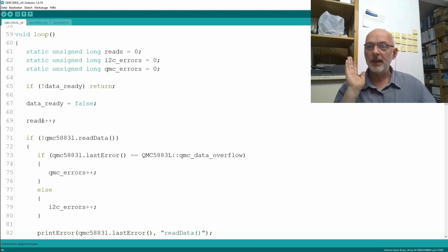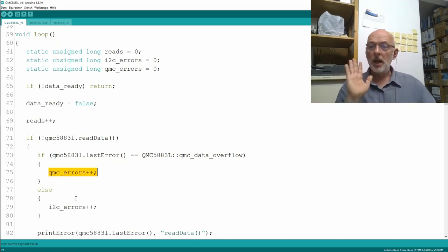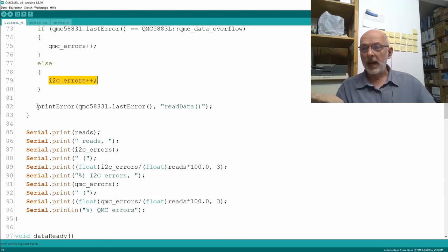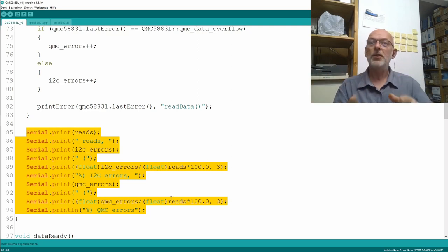The next two lines are unchanged, just handling the interrupt stuff. If we have data, I increment my reads counter and execute a QMC 5883L read data. Should that fail, I check if my last error was a QMC data overflow. In that case, I increment my QMC error counter. Otherwise, I increment my I2C error counter. If we had an error, I print out the error. And in each loop, I print out a nicely formatted statistic of the errors to the serial port.